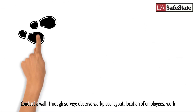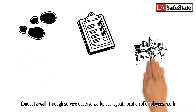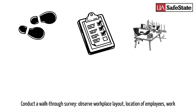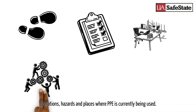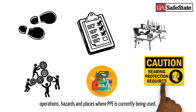Step five: Conduct a walk-through survey. Observe workplace layout, location of employees, work operations, hazards, and places where PPE is currently being used.